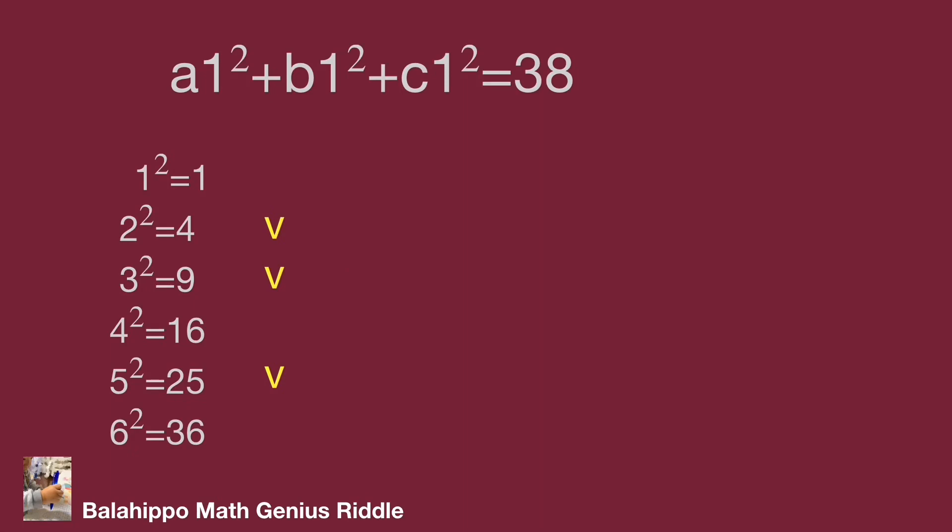The sum of 4, 9, 25 equal to 38. Modify the equations as 2 squared plus 3 squared plus 5 squared equal to 38.